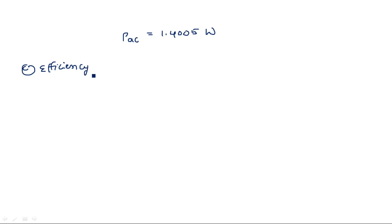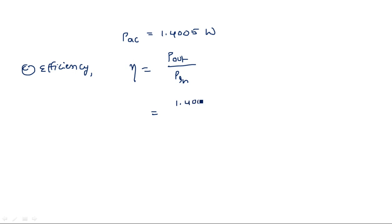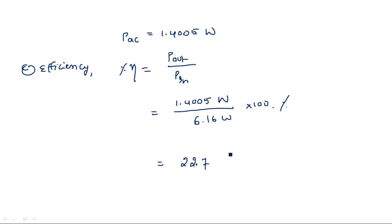Now using these two results we can calculate efficiency. Eta equals output power divided by input power — that is, how much power we apply at the input of the reflex klystron versus how much we get at the output. So P_out, which is PAC equal to 1.4005 watts, divided by 6.16 watts, multiplied by 100.